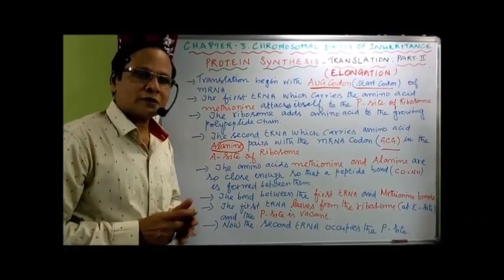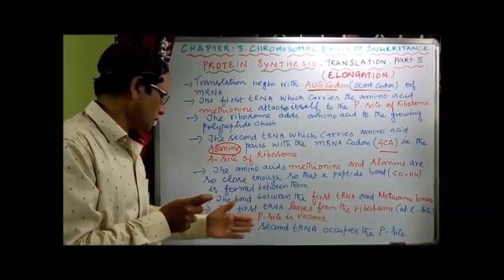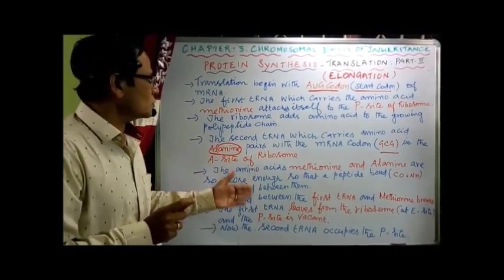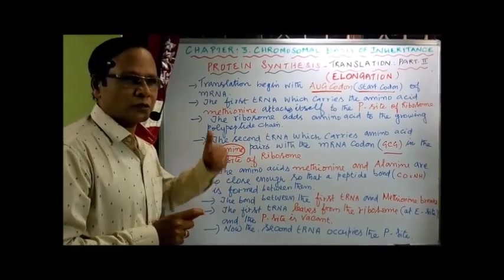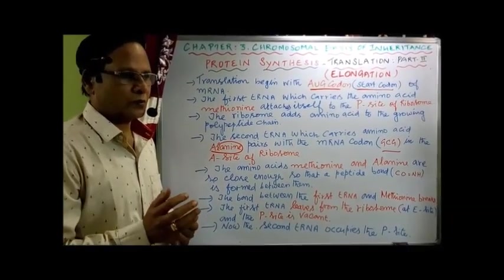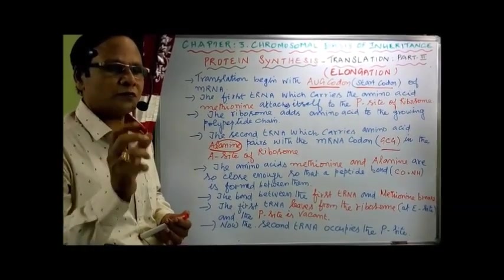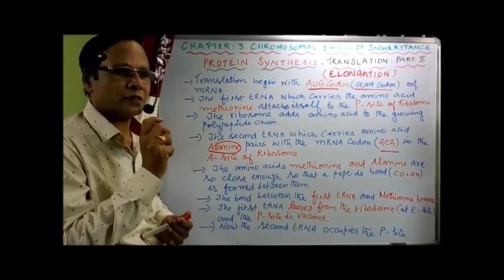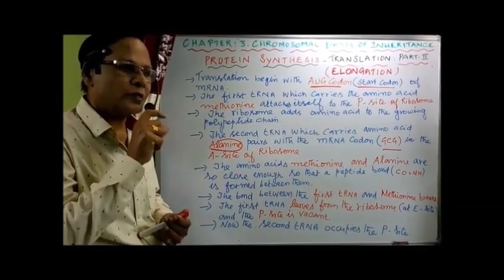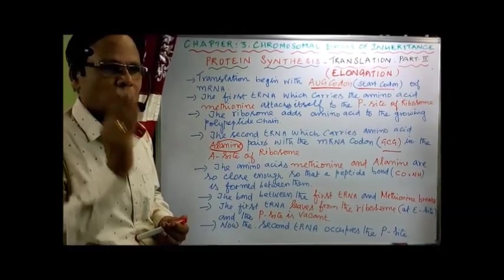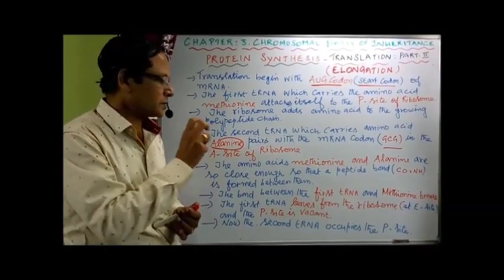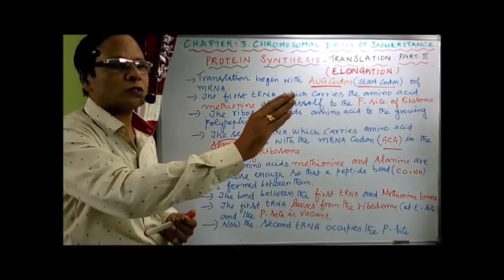The peptidyl tRNA with the two amino acids is shifted from the A-site to the P-site, and now the A-site is vacant. One by one the codons are shifted, and the amino acids carried by tRNA first enter the A-site, then move to the P-site. At the same time a peptide bond is formed. This sequence of events happens repeatedly, and the ribosome moves all along the mRNA — from one codon to the next — forming a growing polypeptide chain.